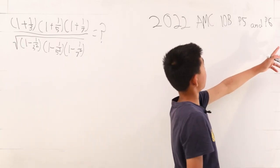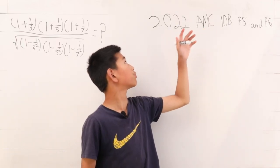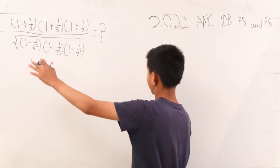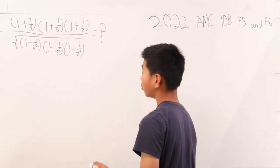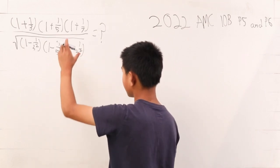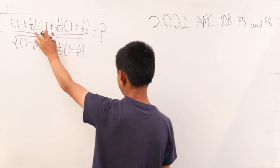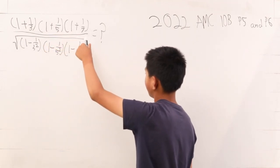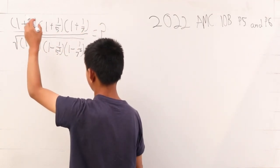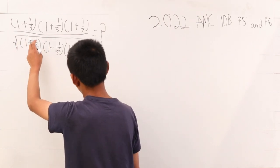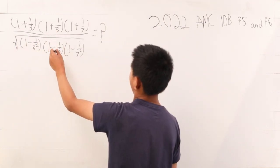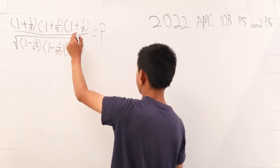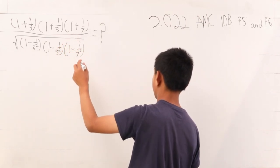Moving on to problem 5 and problem 6 from the AMC 10B of 2022. This is problem 5. We want to find: 1 plus 1/3 times 1 plus 1/5 times 1 plus 1/7 divided by the square root of 1 minus 1 over 3 squared times 1 minus 1 over 5 squared times 1 minus 1 over 7 squared.